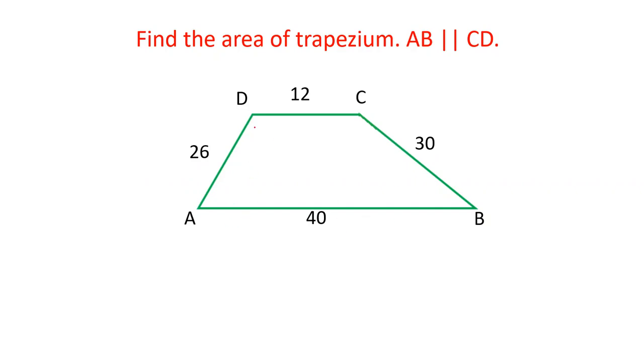ABCD is a trapezium. AB is parallel to CD. Length of AB is 40, length of CD is 12, BC is 30, AD is 26. We have to find the area of trapezium. Let's see how we can solve this question.